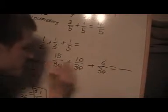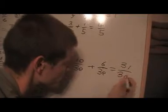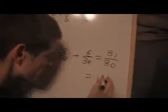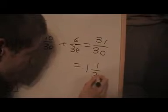That's 21 plus the 10 is 31 over 30. Which you can rewrite as you like as 1 and 1 30th.